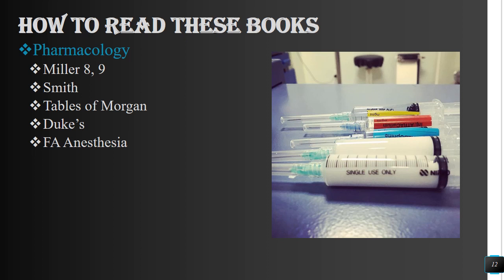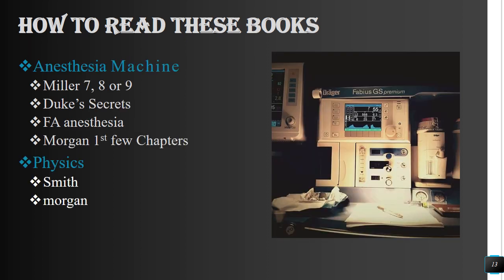For the anesthesia machine, you can use any textbook for general content, but for the anesthesia machine specifically I recommend only Miller's Anesthesia. The chapter on the anesthesia workstation is written excellently in Miller 7 and Miller 8, and also Miller 9 — preferably do Miller 7 and Miller 8. You can also revise the anesthesia machine from Duke's Secrets and First Aid Anesthesia, plus the first few chapters of Morgan.